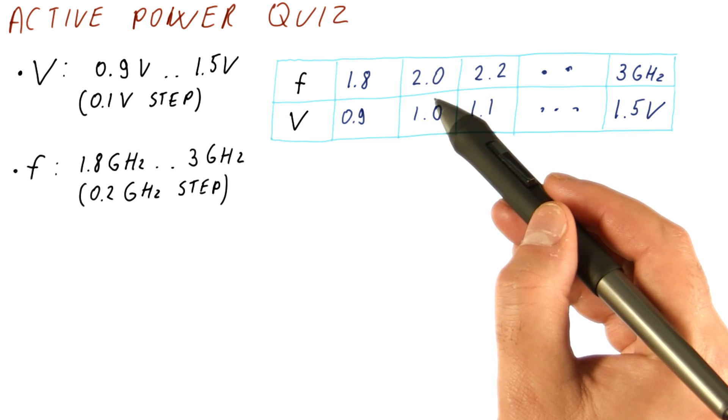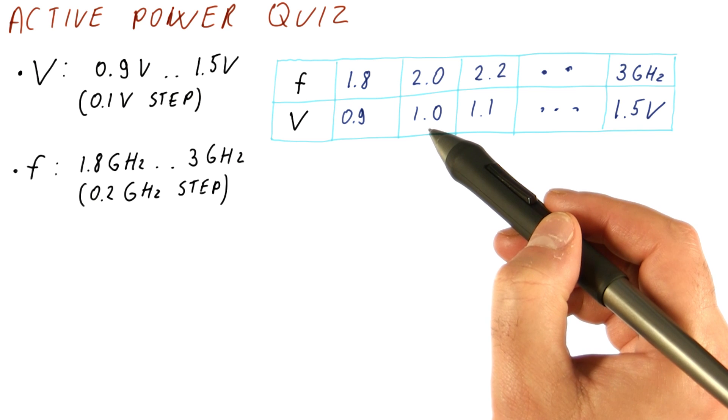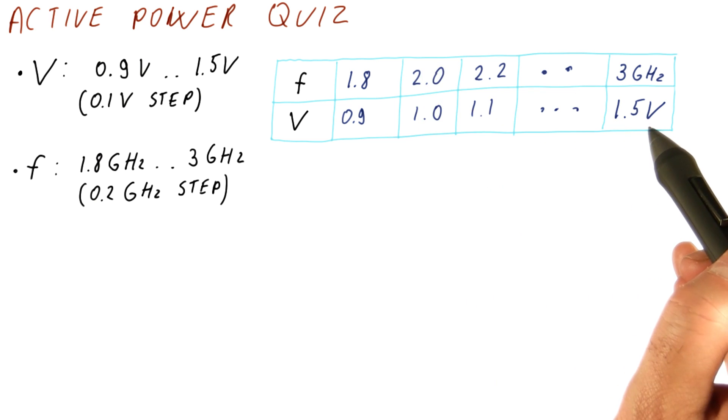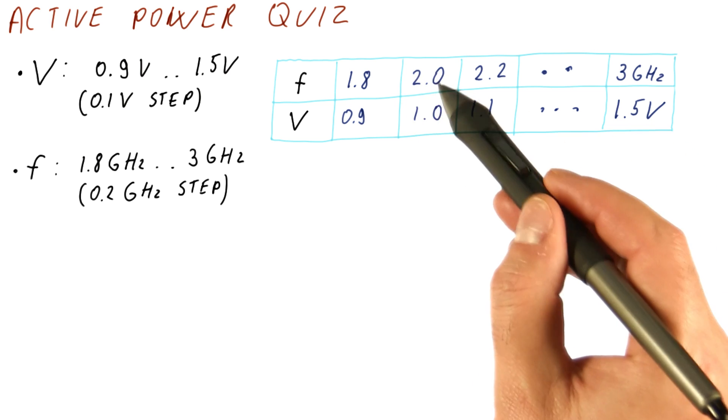Of course, you're allowed to use a 2 gigahertz frequency setting with any voltage that is 1.0 volts or above. So we could, for example, do 2 gigahertz and 1.5 volts, although that's going to be less power efficient than using the lowest voltage available for that frequency.